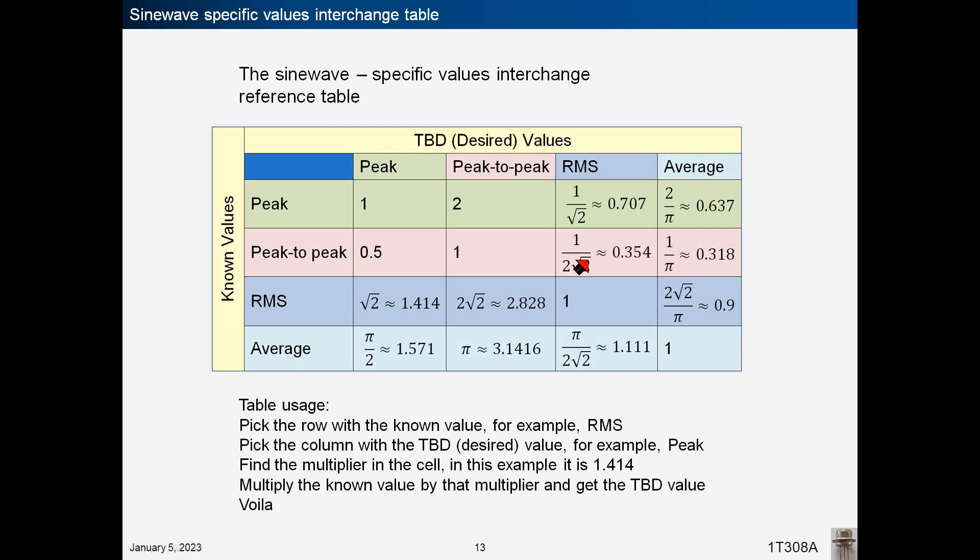For sine wave voltages and currents, the parameter relationship table is shown below. To convert between two parameters, pick the row with the known value, for example, RMS. Pick the column with the desired value, for example, peak. Find the multiplier in the cell, in this example, square root of 2. Multiply the known value by the multiplier, and get the desired value.